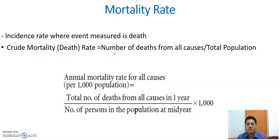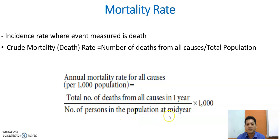The crude death rate can be calculated by the number of deaths from all causes divided by the total population. The formula is: Annual mortality rate for all causes per 1,000 population equals total number of deaths from all causes in a year divided by number of persons in the population at mid-year, multiplied by 1,000. From this formula, you can calculate the mortality rate in a particular community.